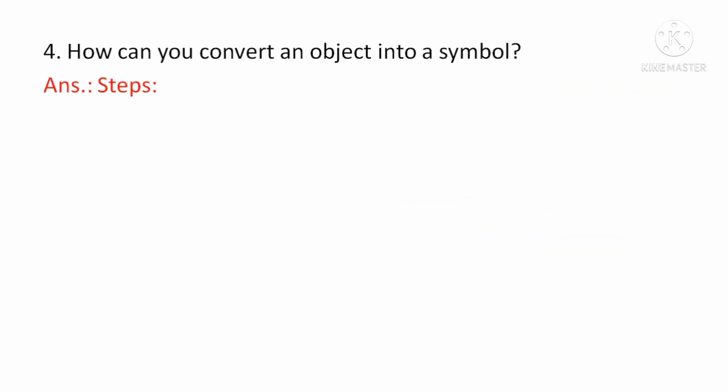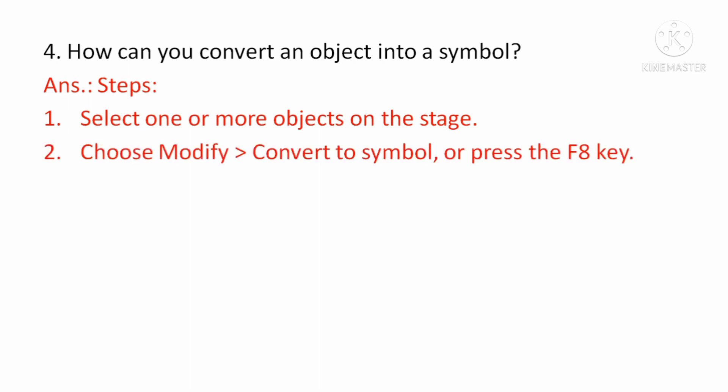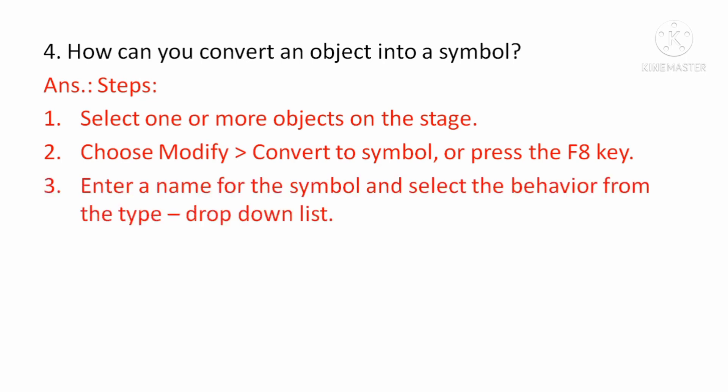How can you convert an object into a symbol? सबसे पहले आप उस object को select करिए. फिर Modify menu में जाईए और वहाँ पर Convert to Symbol option को choose करिए, या फिर आप directly F8 key press कर देजिए. वहाँ पर आपको उस symbol का name enter करने का option आएगा. Symbol का name enter कर देजिए, उसका behavior choose कर देए, और फिर OK button पर click कर देए. इस तरह से आप एक object को symbol में convert कर पाएंगे.